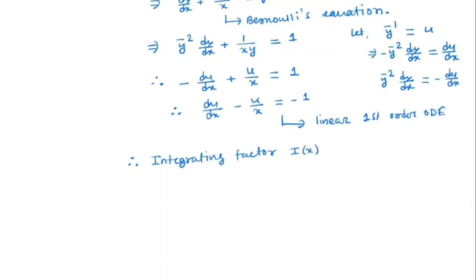Factor I(x) is equal to e to the power integral of minus 1 by x dx because here coefficient of u is minus 1 by x. So, it is e power minus ln x which is same as e power ln x inverse which is nothing but x inverse.